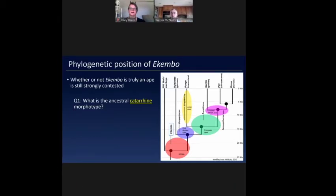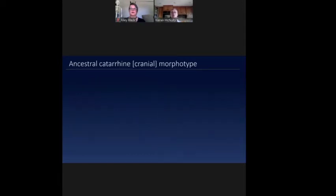One is what does the ancestral catarine actually look like? Part of trying to answer the question of where Akembo might sit means in one way or the other, using cladistic analyses, using other sorts of analyses, we have to be able to figure out what the stem node would have looked like. And so what can we say about that based on this new specimen or analyses associated with it? And then two, what then does the new specimen tell us if anything, about the phylogenetic position of Akembo, is it truly an ape or is it not? So starting with that first question about the ancestral catarine morphotype.